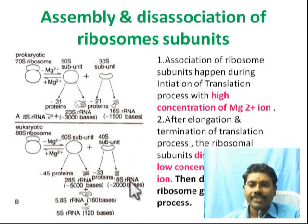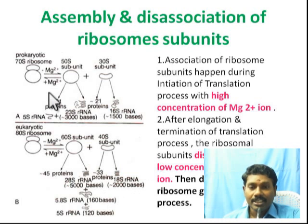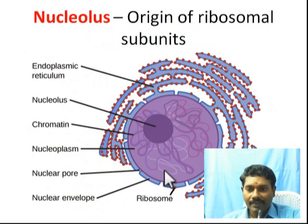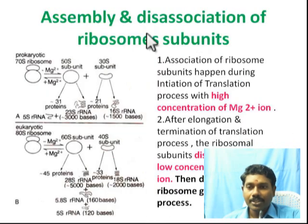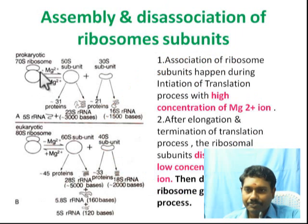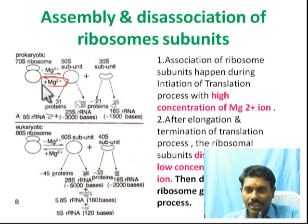The role of Mg2+ ion is very essential. Magnesium ion concentration is important — if you have a higher concentration of Mg2+, the larger subunit and the smaller subunit are joined together and are ready for translation, that is protein synthesis.